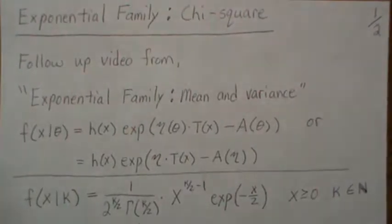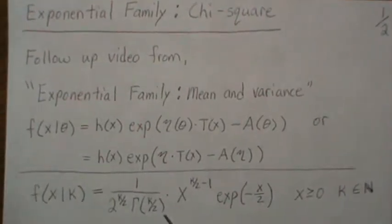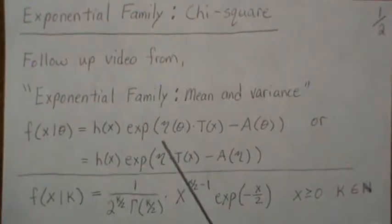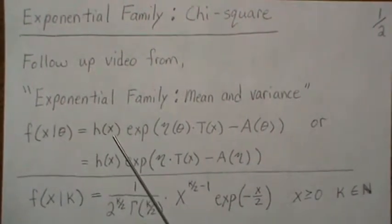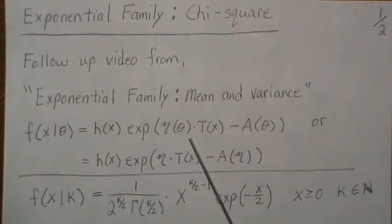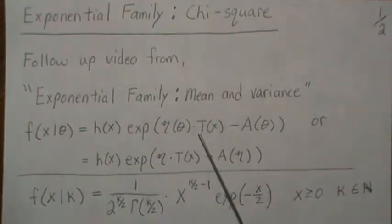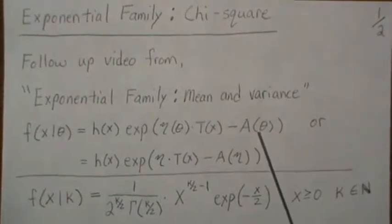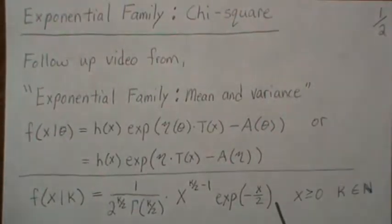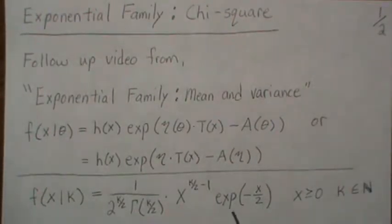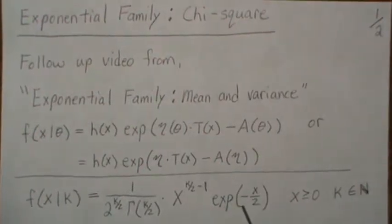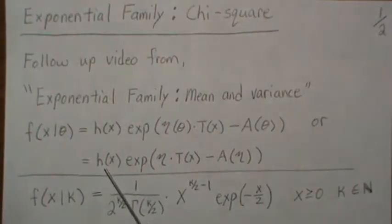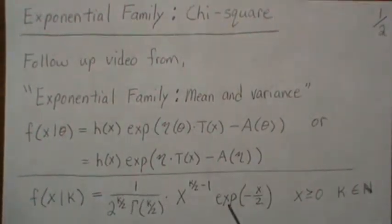To do this, we need a function of the data, a function of the parameters times a function of the data, and a function of the parameters. Here, this is solely a function of the data, the x — so that's probably going to be our h of x.